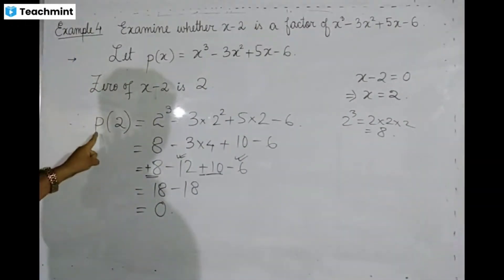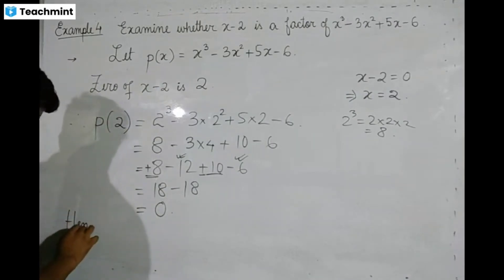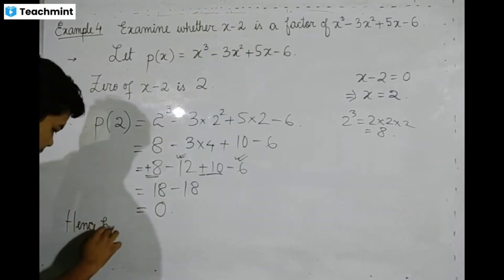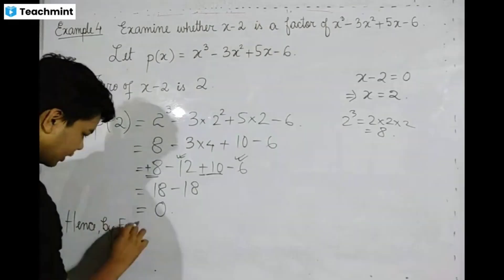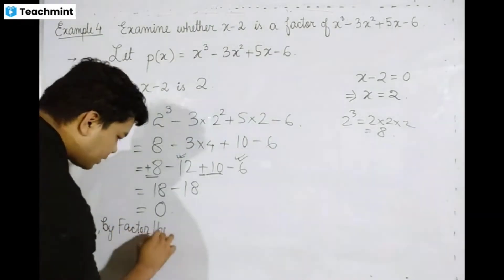So the value of p of 2 is 0. Hence, by Factor Theorem, Factor Theorem is not done. Hence by Factor Theorem.